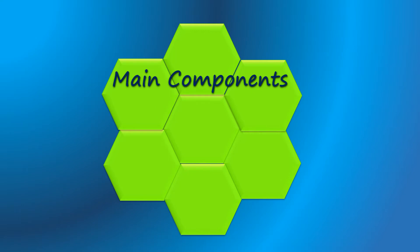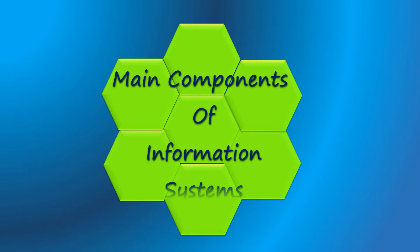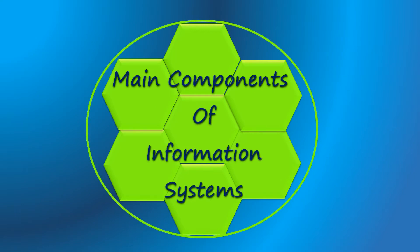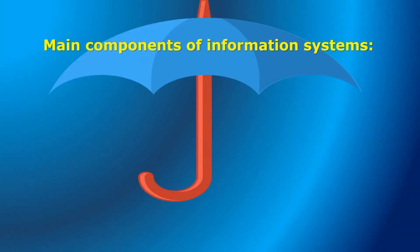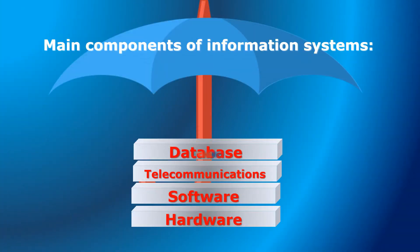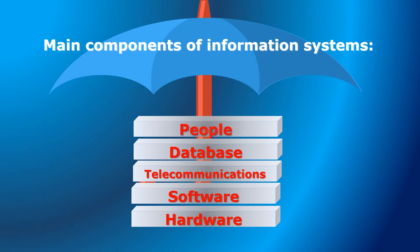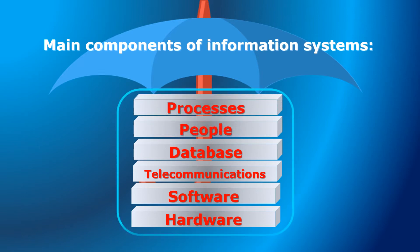Main components of information systems. An information system is a combination of hardware, software, telecommunication networks, and processes that people build to collect, create, and distribute information in an organization.